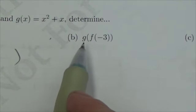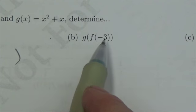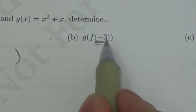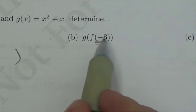Notice again that this is now g of f of negative 3. Now order of operations is going to force us to look inside this first. So the first set of brackets here inside has got this negative 3 in here.